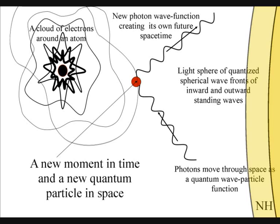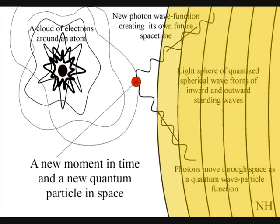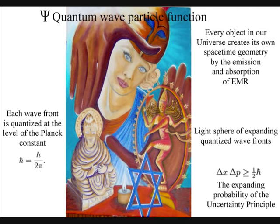Each atom will radiate out light spheres of quantized wavefronts. Each wavefront will create a probability of a future event. When a wavefront comes in contact with the electrons on the surface of another atom, it will create a new moment in time and space in the form of a photon-electron coupling.